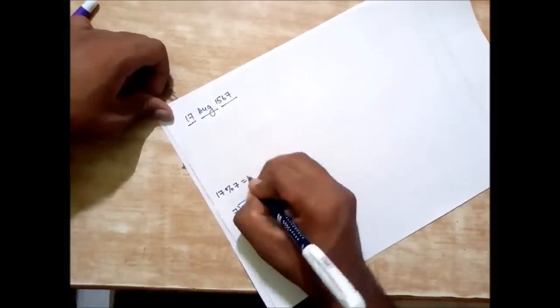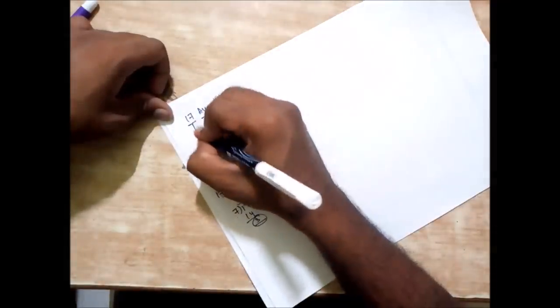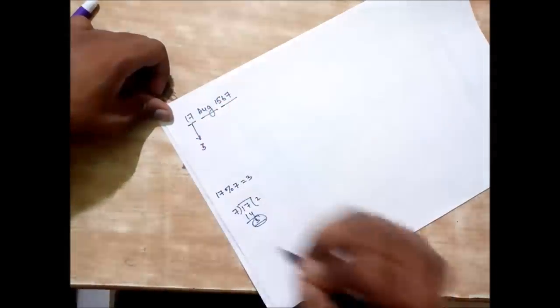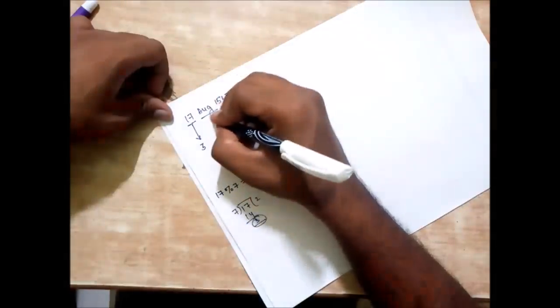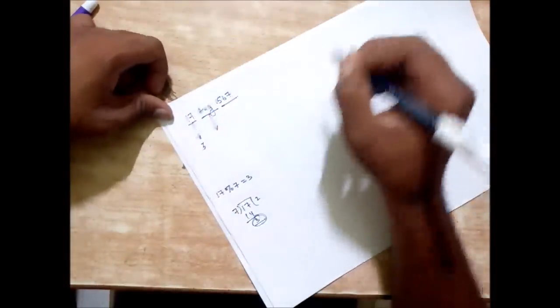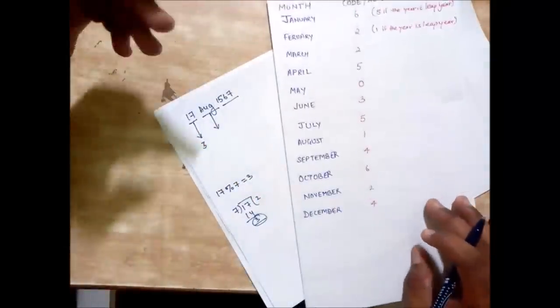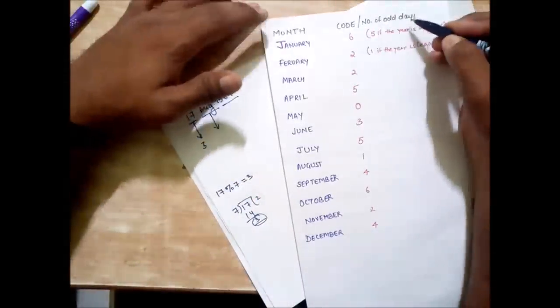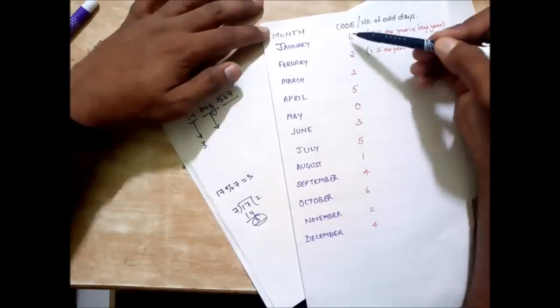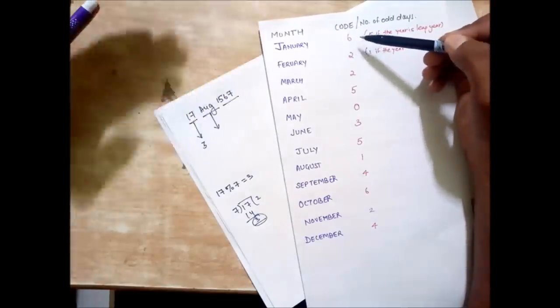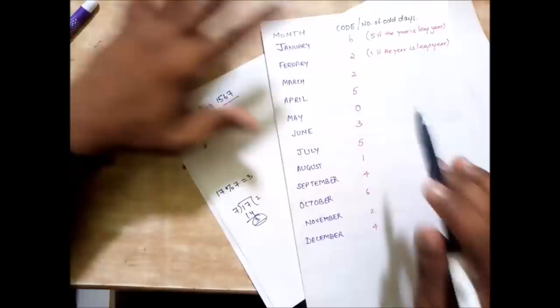Now we come to the month which is August. For finding out the number of odd days of a month I have this list of months with their number of odd days.